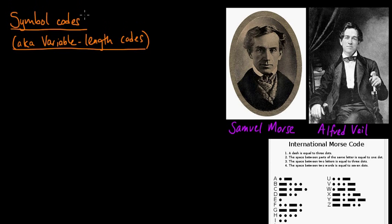That's what we're going to talk about - symbol codes or sometimes they're called variable length codes because each of these code words has a different length.